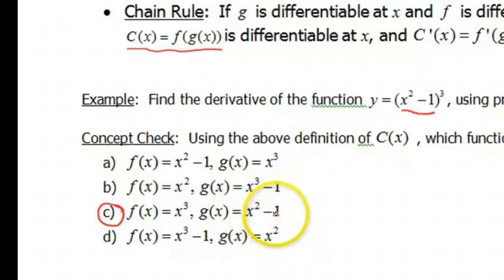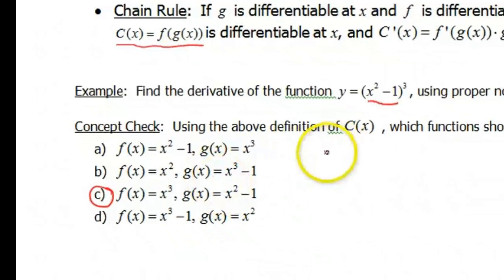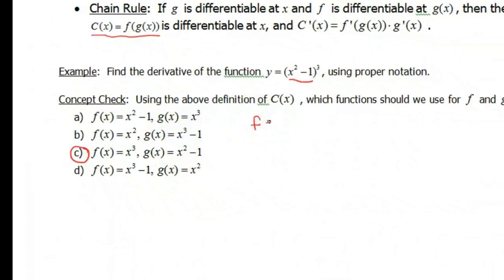So these functions are fairly straightforward to do the derivatives. If f is x³, your outside function, and g is x² - 1, that's your inside function. Then the derivative of f, using the power rule, is 3x². The derivative of g, your inside function, again using the power rule, is simply 2x.